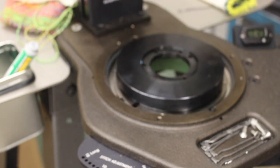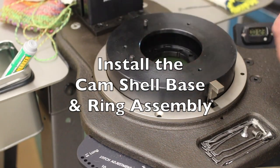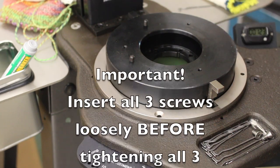Rotate the crank to confirm it spins freely. Install the cam shell base and ring assembly, making sure the silver plunger is in front as shown.